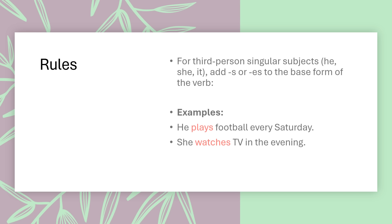Rules of Simple Present Tense: For the third person singular subjects — he, she, it — we add 's' or 'es' to the base form of the verb. For example: he plays football every Saturday; she watches TV in the evening.